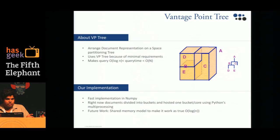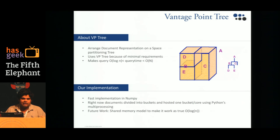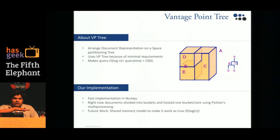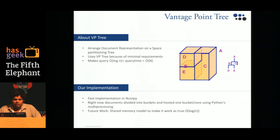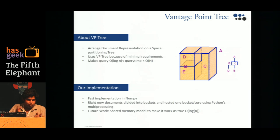We already have a parallel implementation where we divide documents into n buckets, put them on different cores, and build different VP trees. We are slowly moving towards a shared memory kind of parallelism to approach true O(log n) performance.